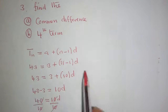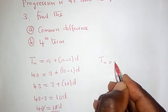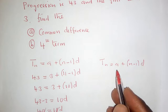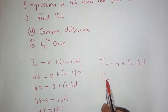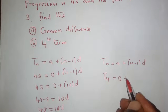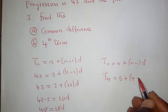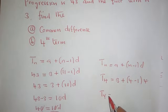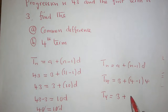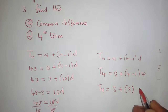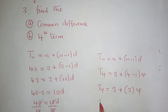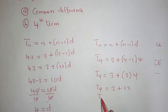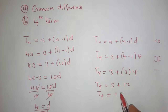The next part asks us to find the 4th term. Using the same formula with a equals 3, n equals 4, and d equals 4: T4 equals 3 plus (4 minus 1) times 4, which equals 3 plus 3 times 4, which equals 3 plus 12, giving a 4th term equal to 15.